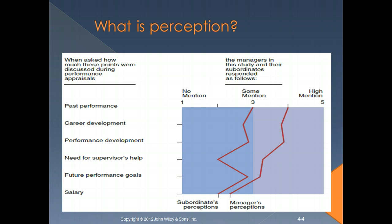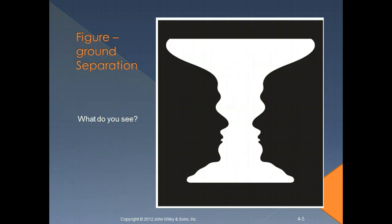When you look at this picture, what do you see? Some people perceive a white goblet. Some people perceive two faces talking to each other. Which of the two did you perceive first? Things can sometimes be seen differently by different people in the same situation, and you always have to be aware of that.